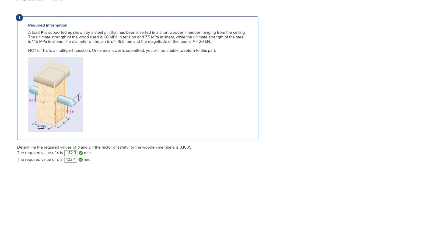For this problem, we are given the ultimate strength in the wood which is 60 megapascals in tension and 7.5 megapascals in shear. We are also given the ultimate strength of the steel rod which is 145 megapascals in shear. The diameter of the pin is 16.5 millimeters, the load P is 20 kilonewtons, and the factor of safety for the wooden member is 3.1005. We are looking for the required values of b and c.